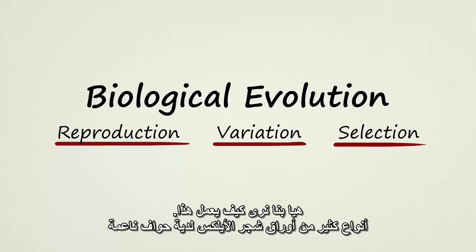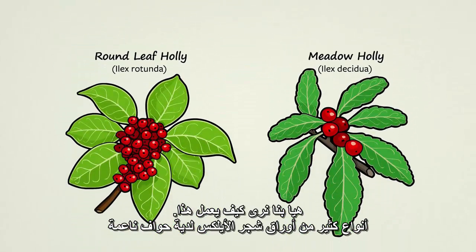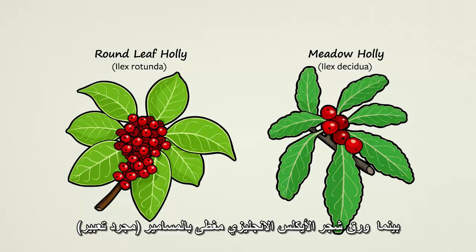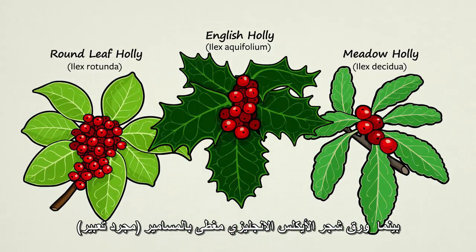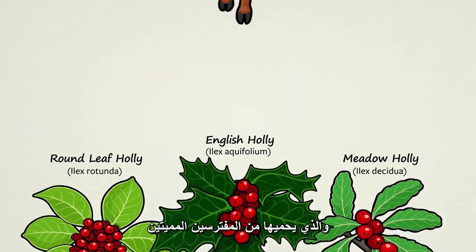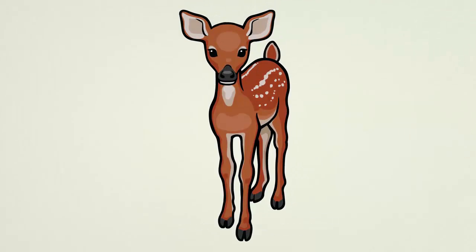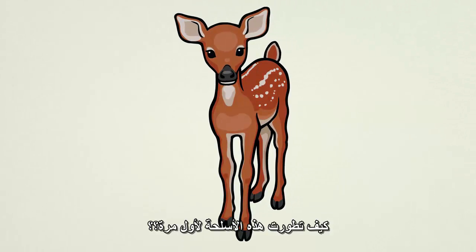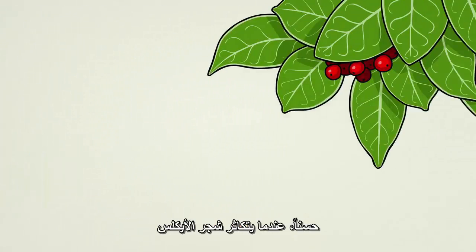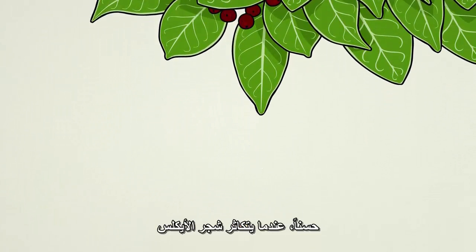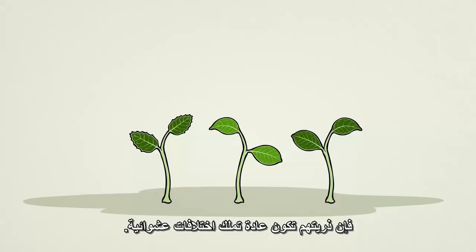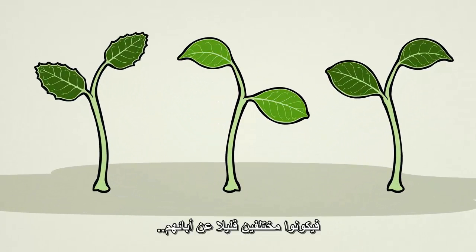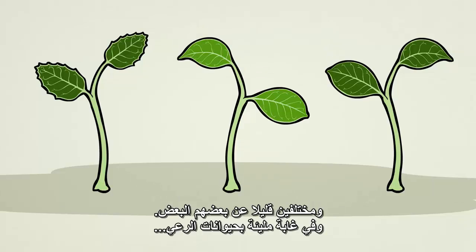Let's see how this works. Many species of holly have smooth-edged leaves. English holly, however, is covered in spikes which protect the plant from deadly predators. How did these weapons first evolve? When a holly plant reproduces, its offspring often show random variation — they are slightly different from their parents and slightly different from each other.